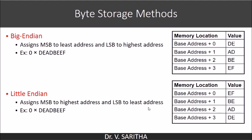To remember these, it is very easy. In the case of little endian, remember triple L — L, L, L. The first L stands for little endian, the second L stands for LSB, and the third L stands for least address. In little endian, LSB is assigned to the least address. When LSB is assigned to the least address, obviously MSB is assigned to the highest address. The reverse is the case for big endian.